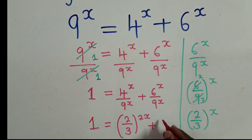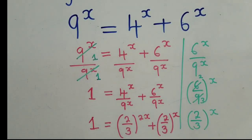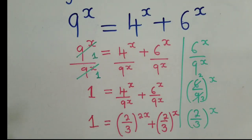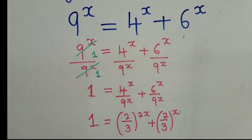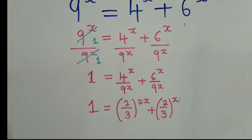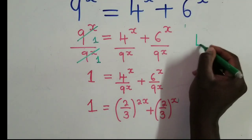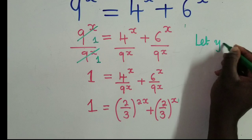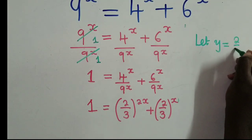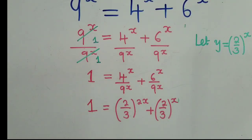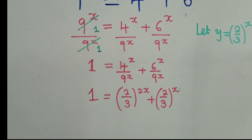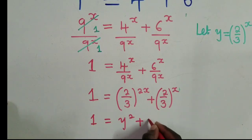This is what we need. If you are following nicely, we are almost there. Let's clean up. From this stage, we let y equal (2/3)^x. This point is very important — we have to keep it.